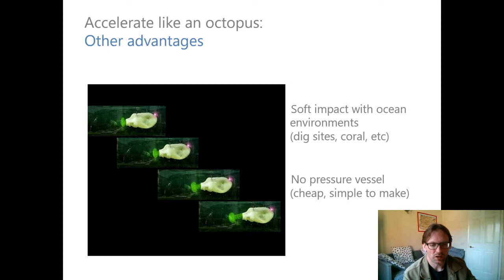There's other advantages to using soft robotics, too. Things like we don't have to worry about running into stuff underwater. So if we're inspecting some kind of energy harvesting device, like underwater tidal turbines, or if we're looking at coral reefs or shipwrecks, we don't have to worry about damaging stuff if we're pretty soft.